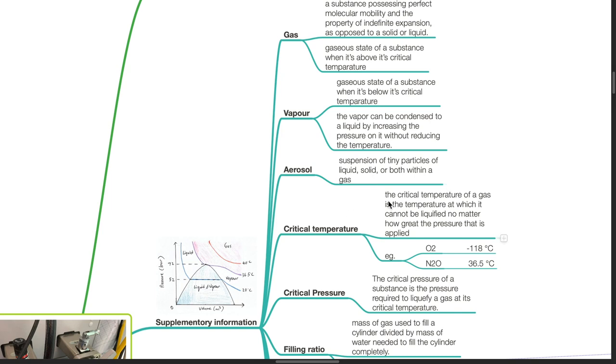Critical temperature of a gas is the temperature at which it cannot be liquefied no matter how great the pressure that is applied. For oxygen, it is negative 118 degrees Celsius. For nitrous oxide, it is 36.5 degrees Celsius.